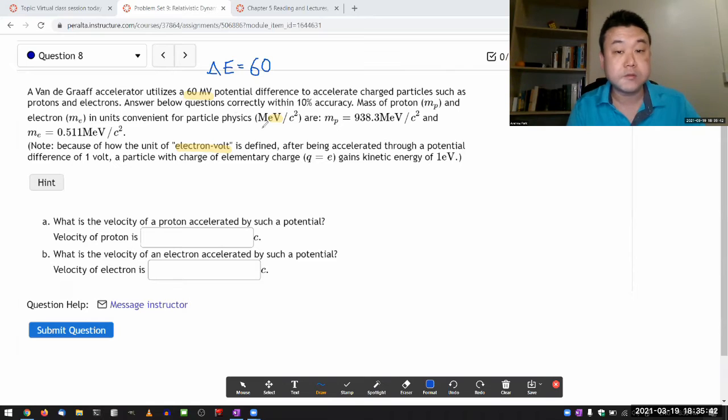then the change in energy of that particle is simply the electric potential difference expressed in electron volt units. So the energy difference for both proton, which has charge of 1e, and electron, which has charge of minus 1e, the magnitude of the energy change will be 60 MeV.